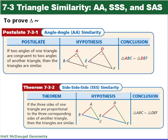Here are our first two — one's a postulate, one's a theorem. The postulate for angle-angle similarity: if two angles of one triangle are congruent to two angles of another triangle, then the triangles are similar. So if angle A is congruent to angle D, and angle B is congruent to angle E, then triangle ABC is similar to triangle DEF.